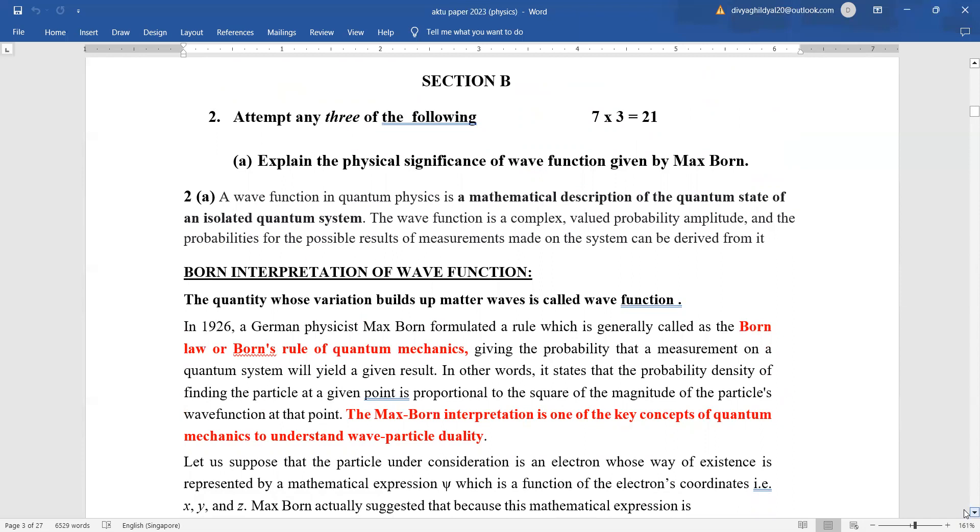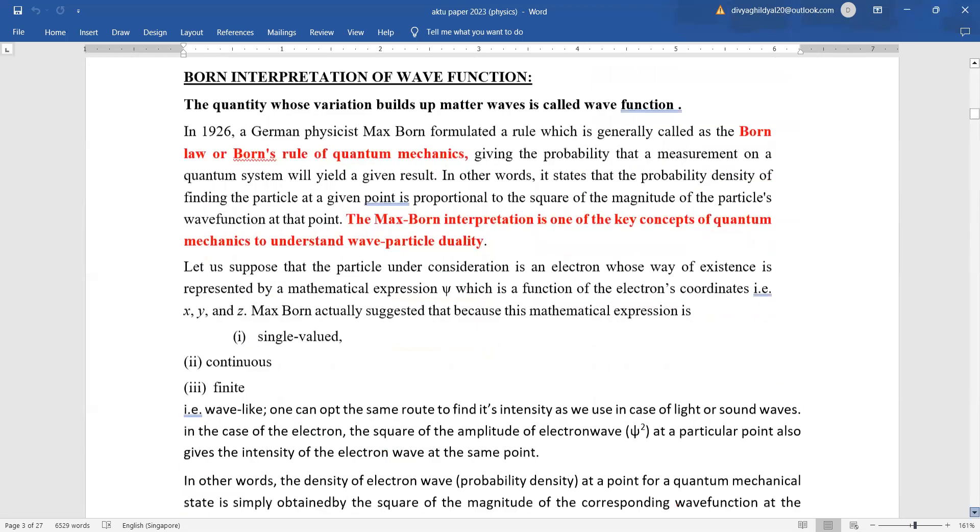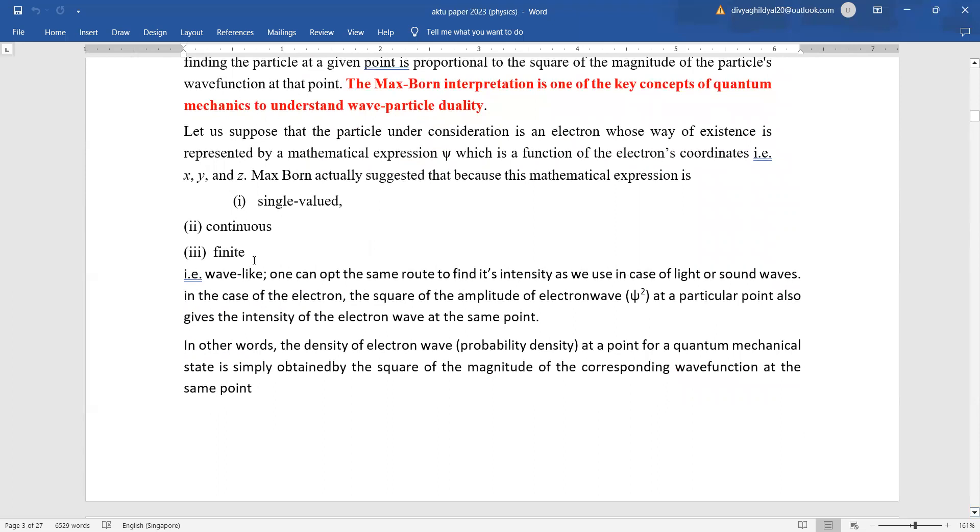Seven mark question: they are expecting you to discuss the physical significance of wave function given by Max Born. Firstly, you will have to tell what a wave function is. A wave function in quantum physics is a mathematical description of the quantum state of an isolated quantum system. It is a complex valued probability amplitude and the probabilities for possible results of measurements made on the system are derived from it. According to Born's rule, this wave function will only be acceptable in quantum physics if it is single valued, continuous and finite. Till here, you can easily fetch two and a half to three marks.